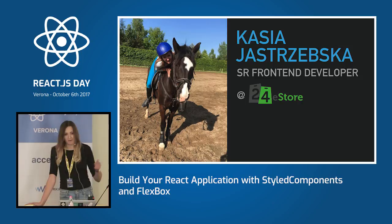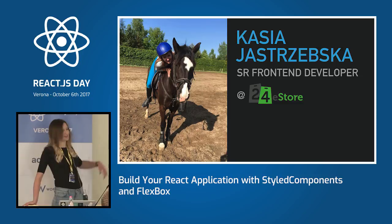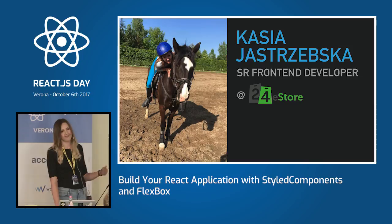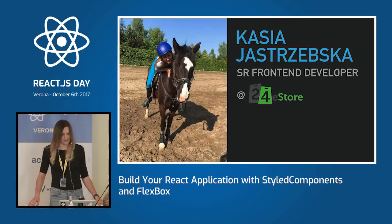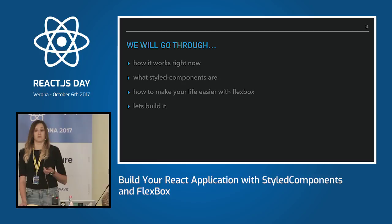My name is Kasia Szczonska — it's pretty hard to pronounce. I'm from Poland. I am a front-end developer at 24 Easter, which is not from Poland, but that doesn't matter. Here's me on a horse. I love horse riding, and I really recommend you to do something besides coding sometimes. Let's go further — I don't have the clicker, so I will just do the pauses.